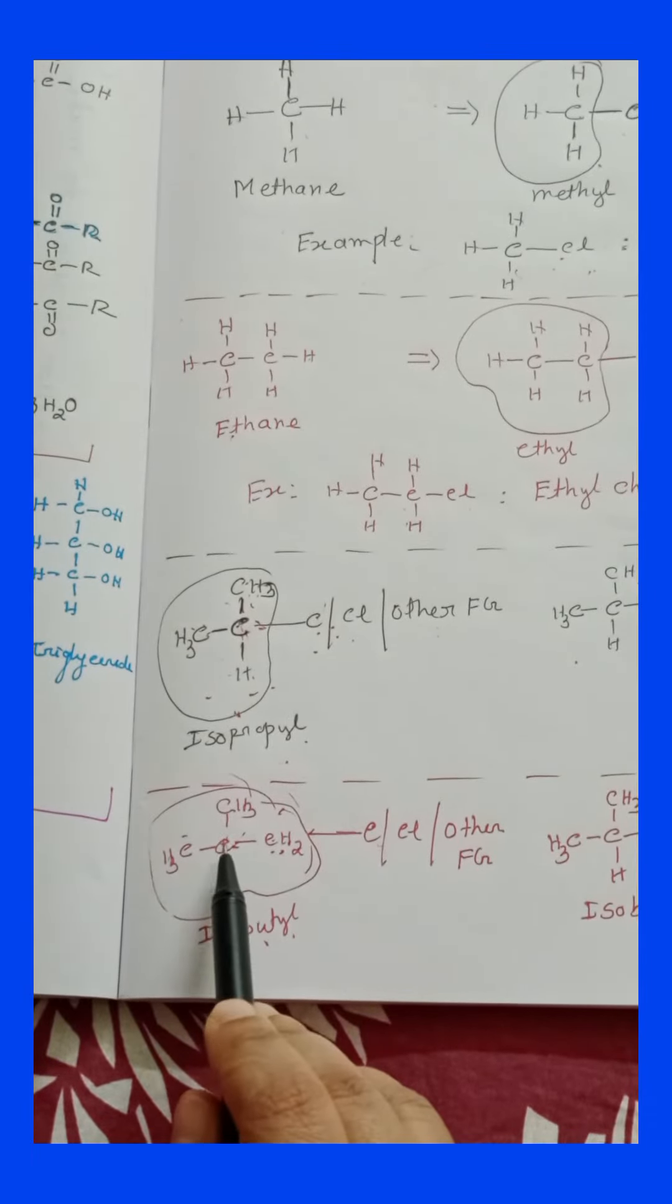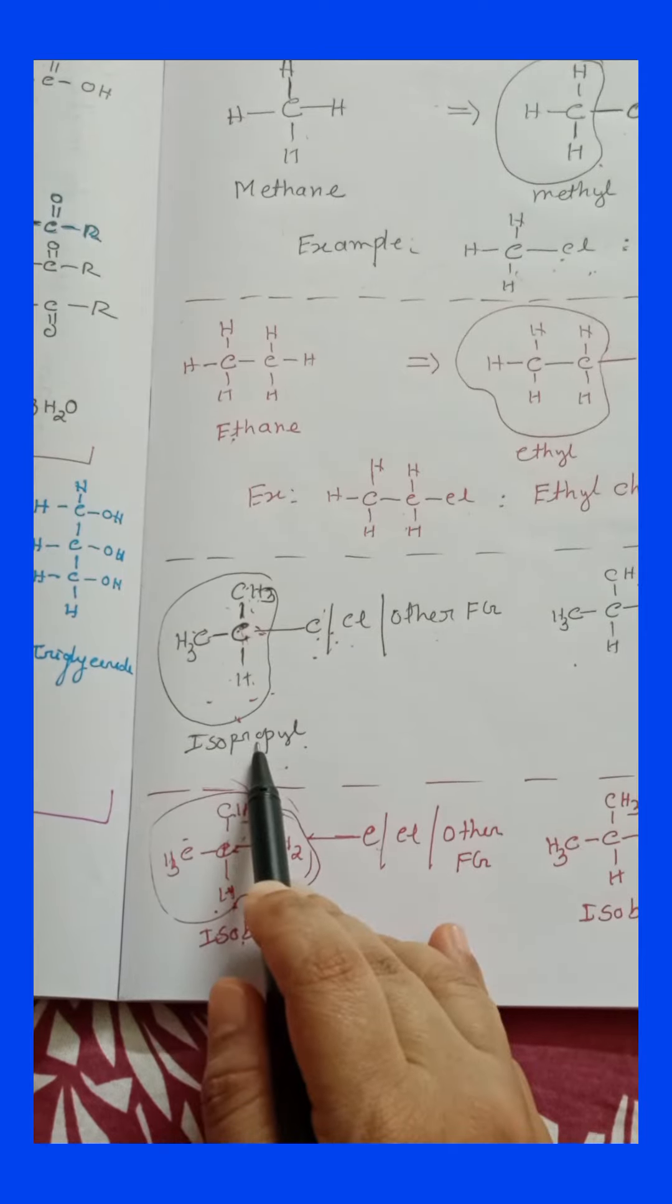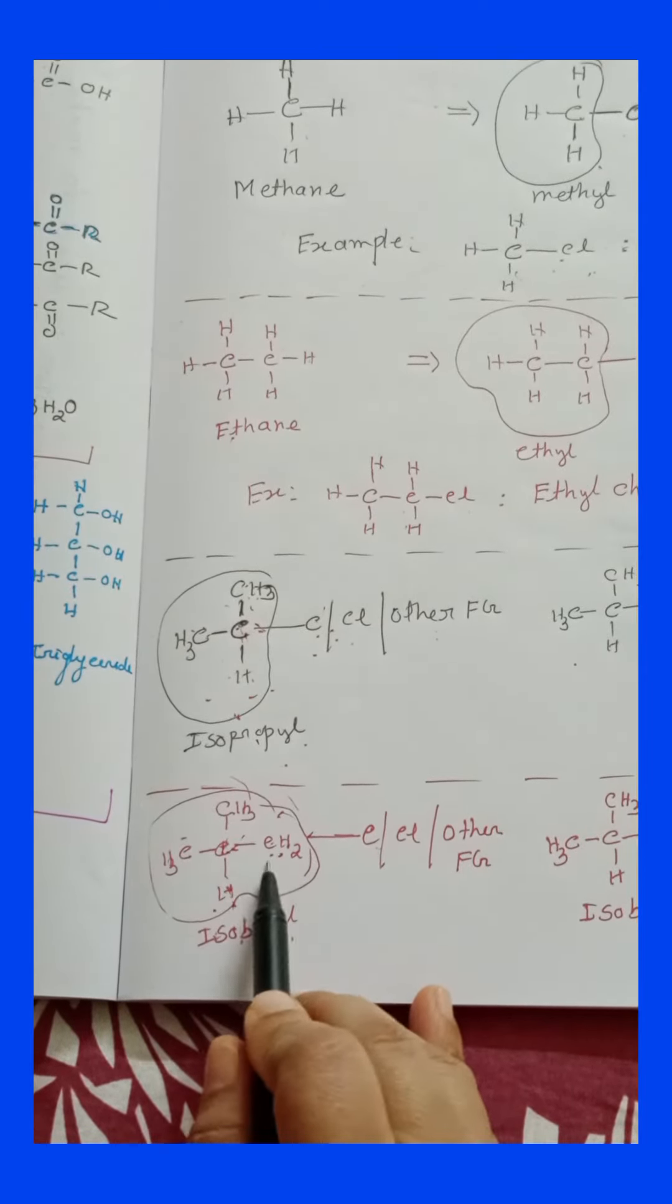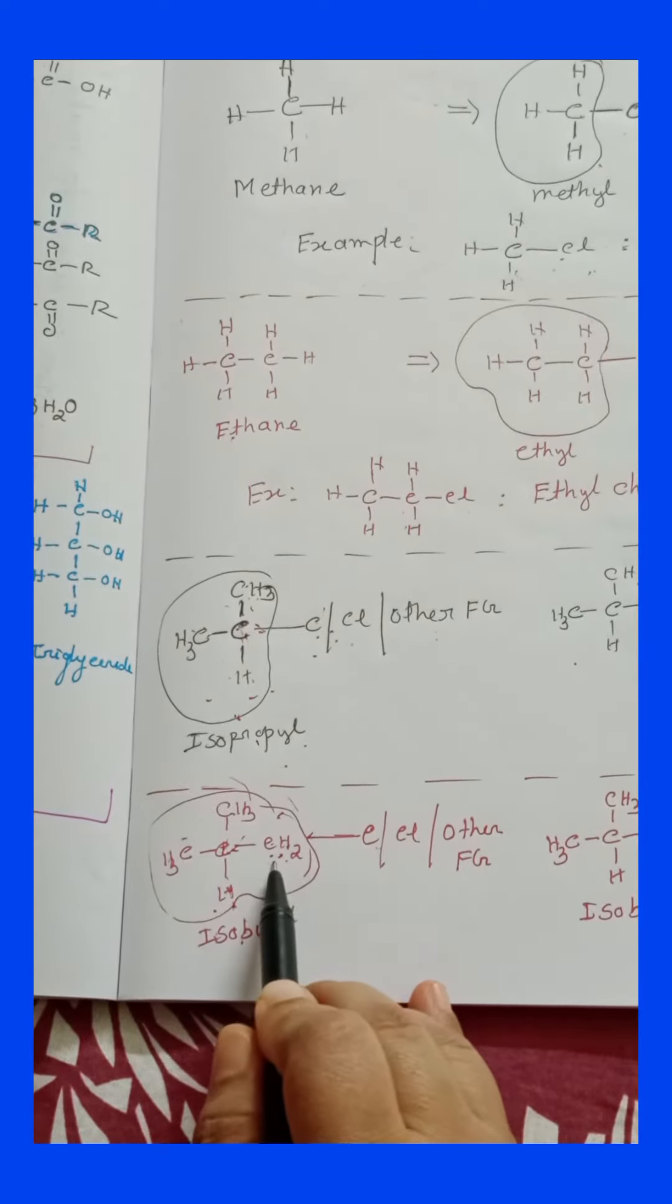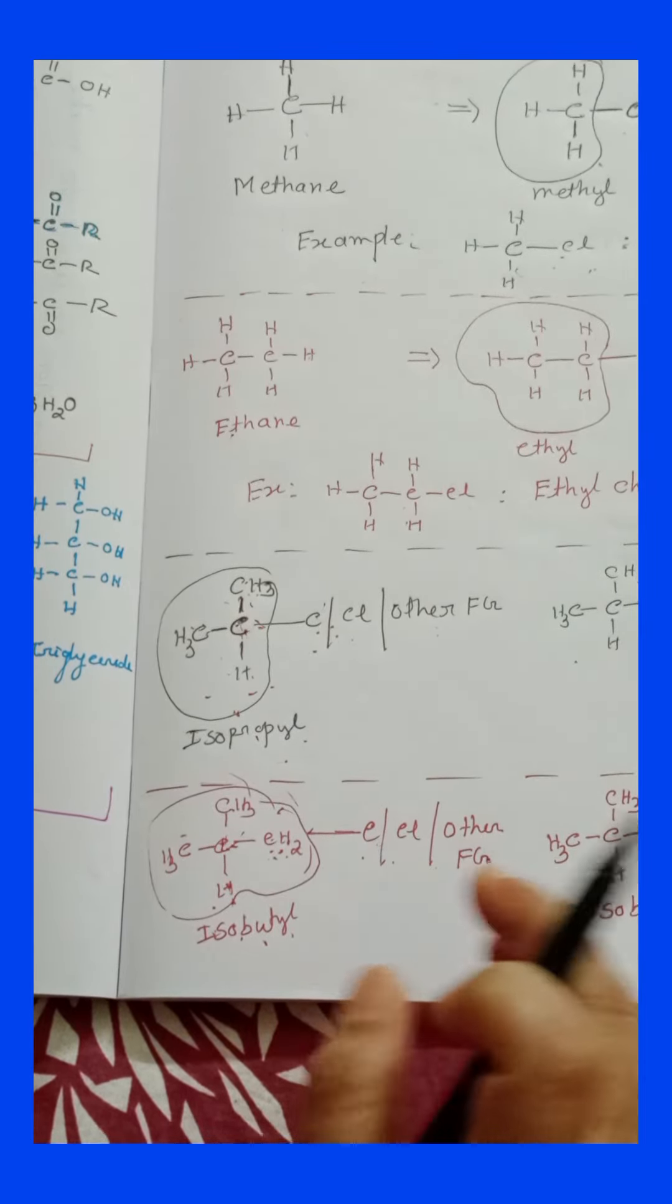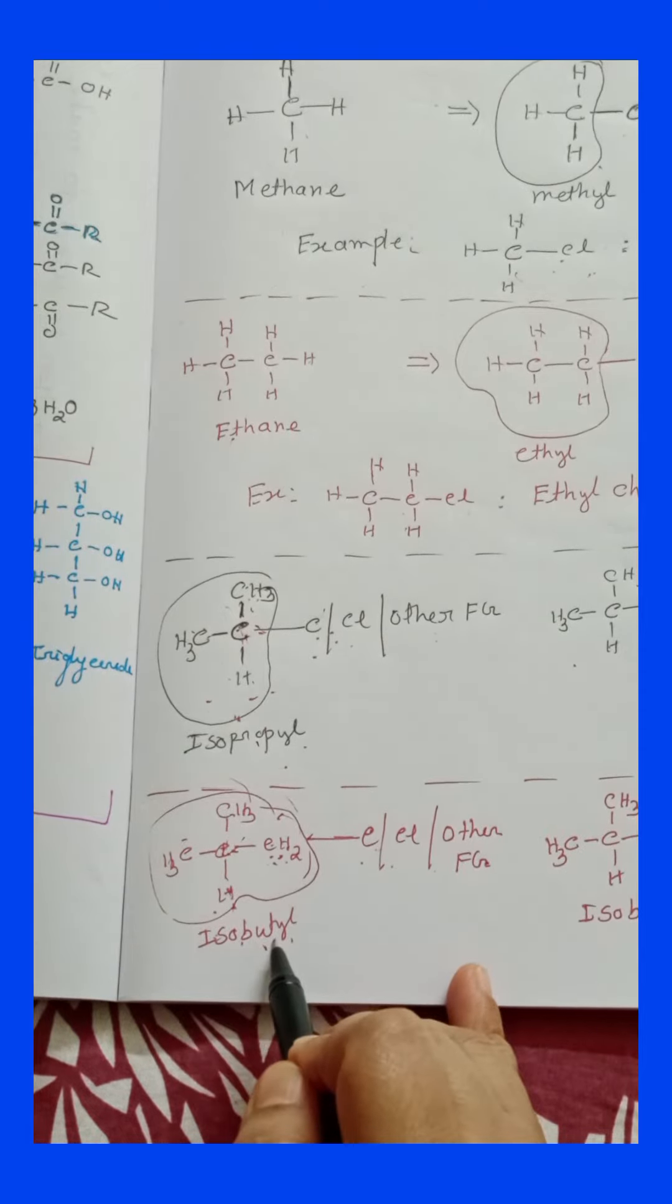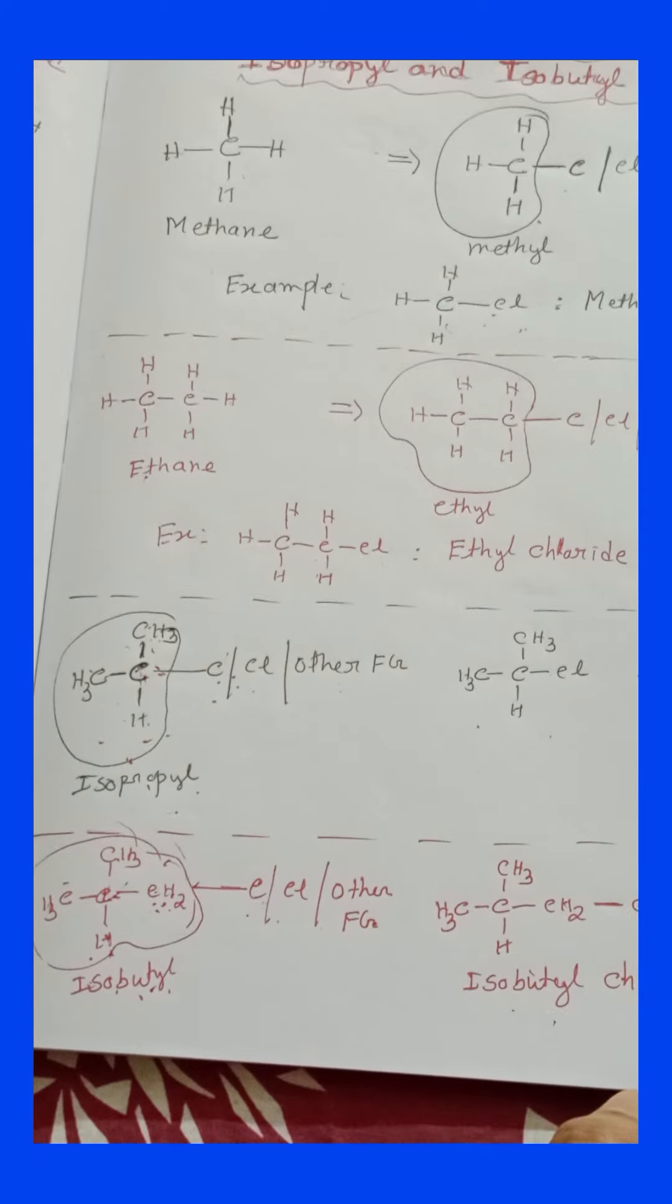Now, isobutyl. Here you can see carbon has 2 methyl and 1 hydrogen, similar to isopropyl, but this carbon is connected with one more CH2, and this CH2 is connected with carbon, halogens, or other functional groups. We know 'but' means 4 carbons. That's why this portion is known as isobutyl. One example is isobutyl chloride.